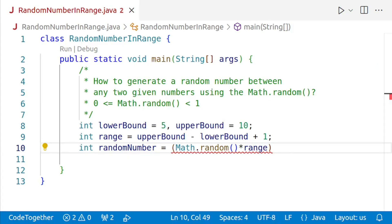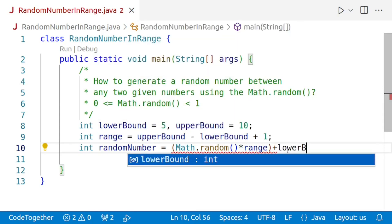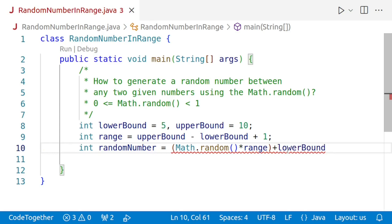Notice that this will give us a random number between 0 and the range, but it's not going to give between lower bound and upper bound. And for that, what we'll do is we'll simply say plus lower bound. Now, the value which will be returned will be between lower bound and upper bound.